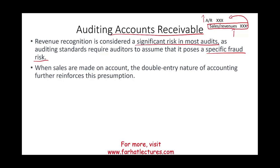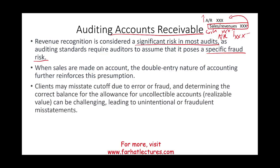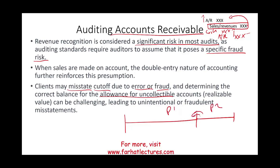Account receivable is also related to cash, because eventually the customer will pay the cash and we will remove the account receivable. So this is the life of a receivable: we sell on account, we receive cash. But sometimes some customers don't pay — we have to deal with uncollectible accounts. Also, the client may make cutoff mistakes due to error or fraud, and determining the correct balance for the allowance is a concern. You could shift account receivable or sales revenue between periods, either in error or fraudulently.